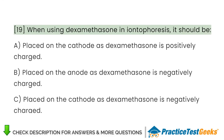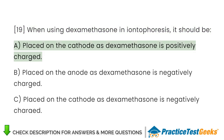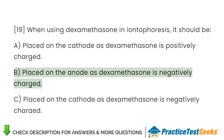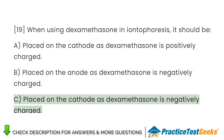When using dexamethasone in iontophoresis, it should be: A. Placed on the cathode as dexamethasone is positively charged. B. Placed on the anode as dexamethasone is negatively charged. C. Placed on the cathode as dexamethasone is negatively charged.